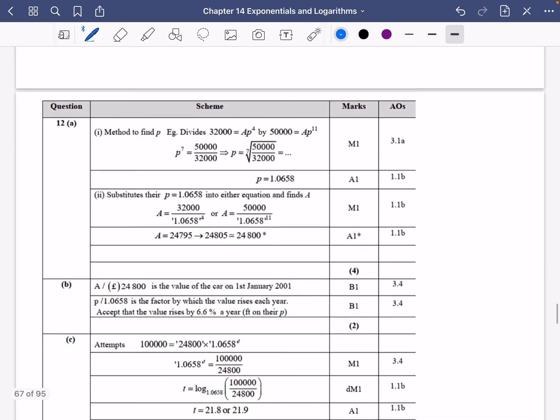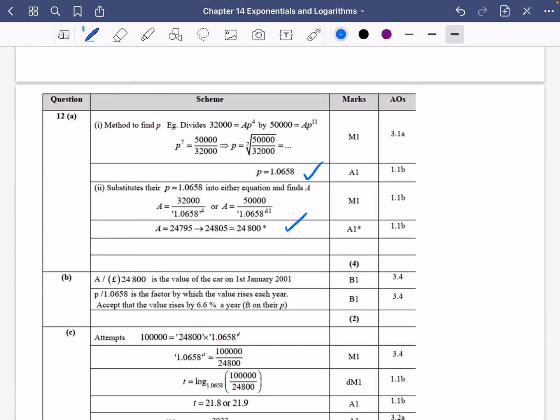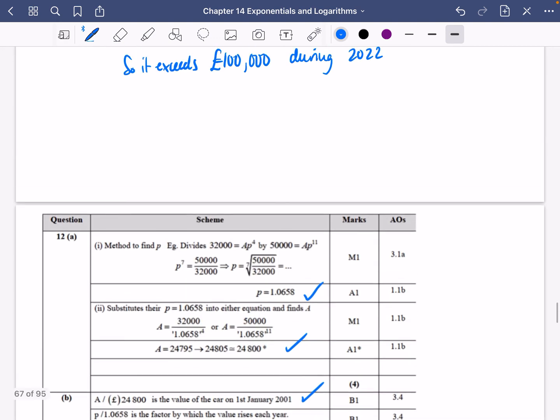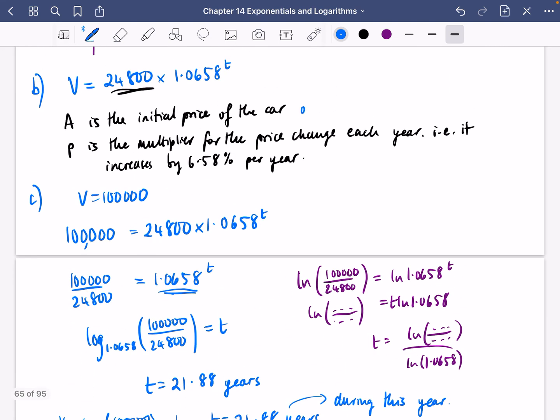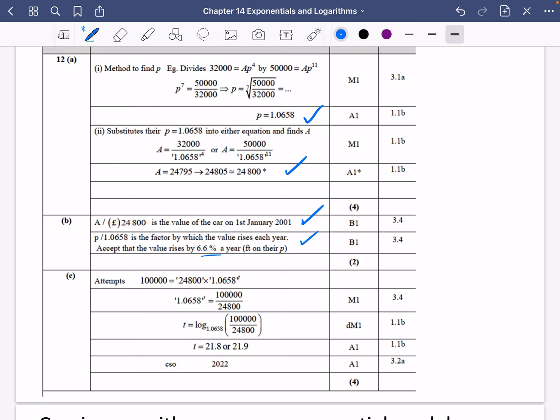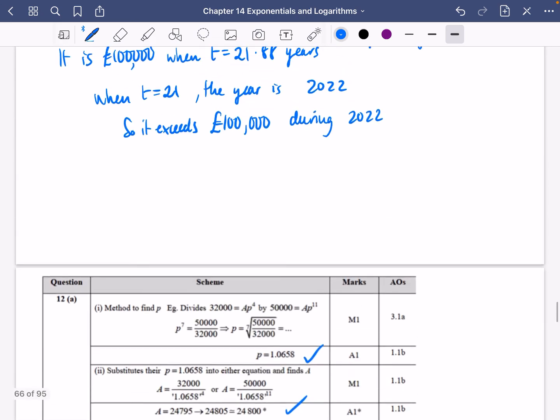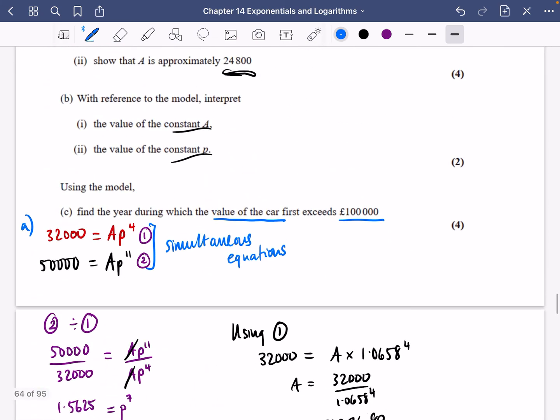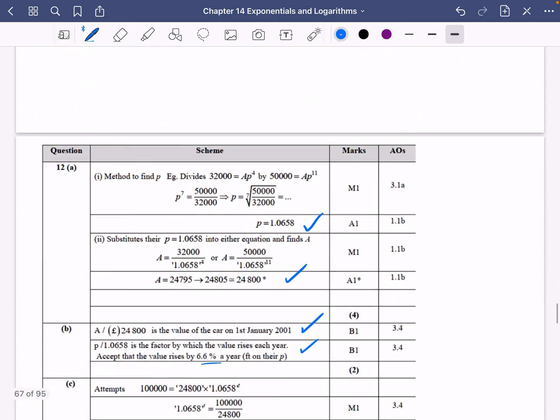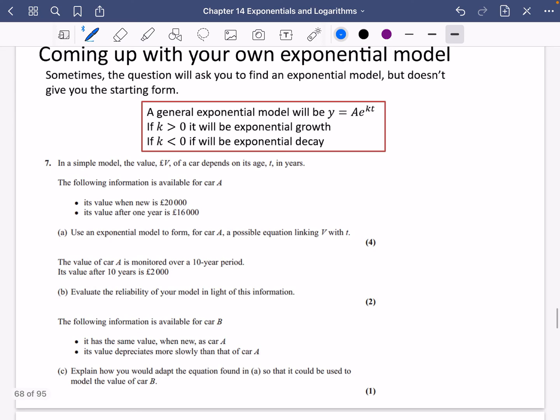Let's check we got this right. We got the value of P and A, the initial price on January 1st, 2001, the multiplier of 6.6% per year, and found the year 2022. These are quite long videos on some pretty difficult questions, but these are all real exam questions. We're going to do a few more on the next bit about coming up with your own exponential model.